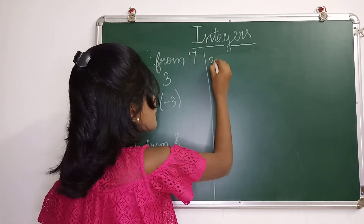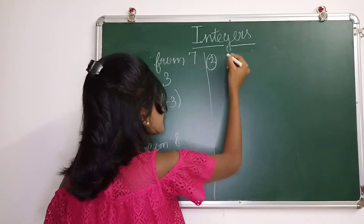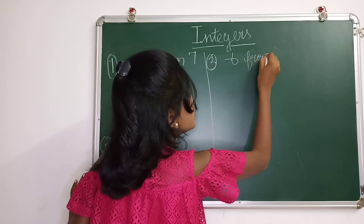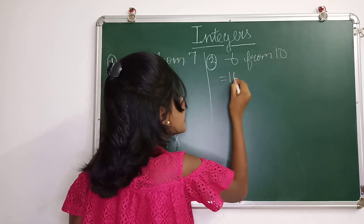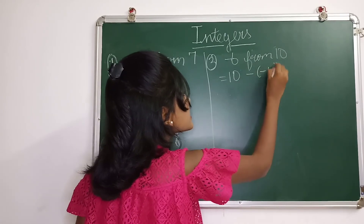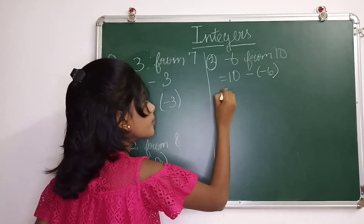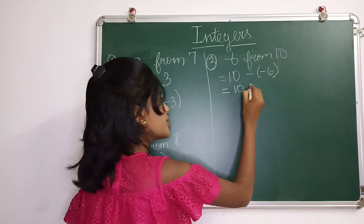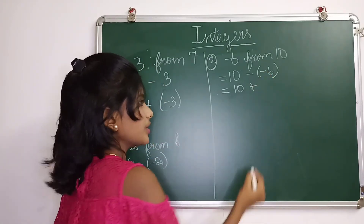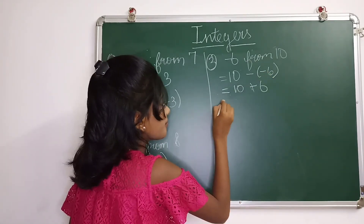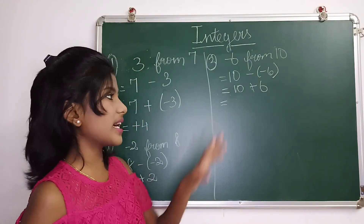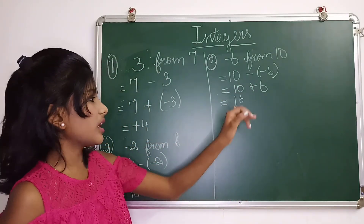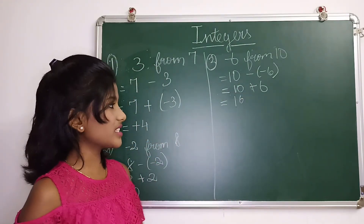The next sum is: subtract minus 6 from 10, that is 10 minus minus 6. We keep 10 as such, convert the subtraction into addition, and take the additive inverse of minus 6, which is 6. So 10 plus 6 is 16, and it's positive, so the answer is 16.